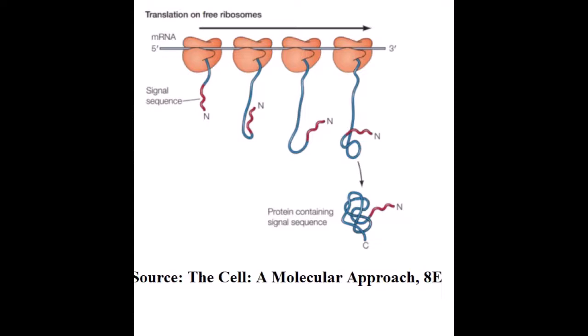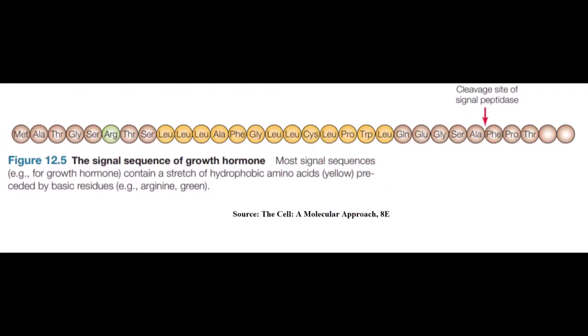As you can see in this image, there is a signal sequence indicated in red color at the N-terminal of the polypeptide chain. These signal sequences are short stretches of 15–40 amino acids long with 7–12 hydrophobic amino acid residues.